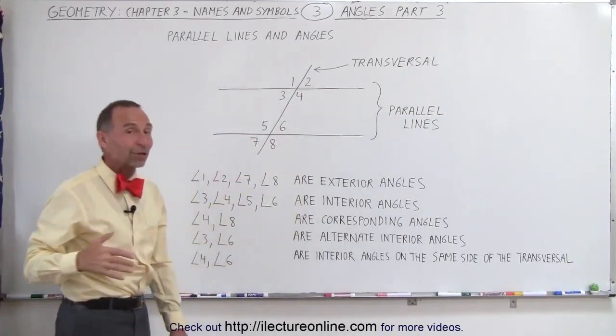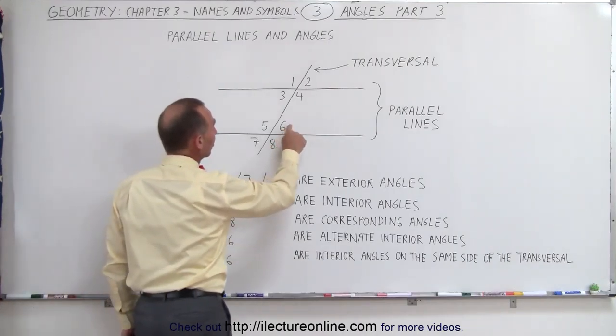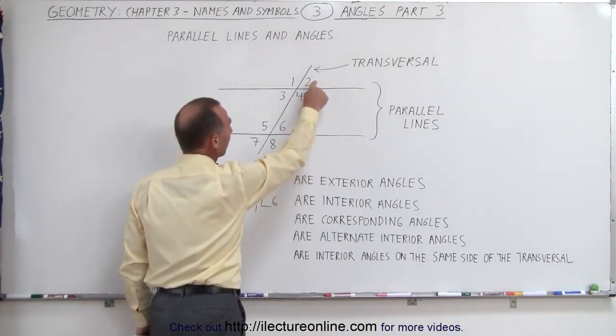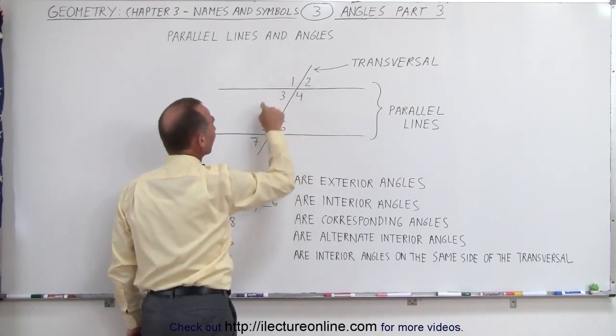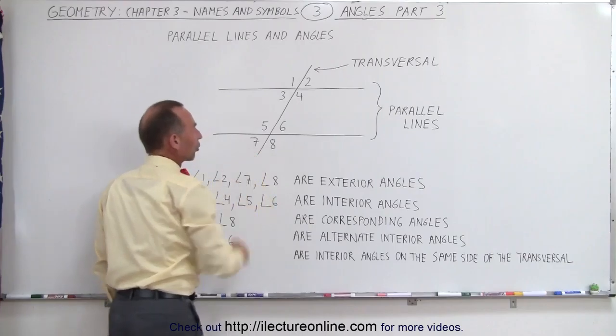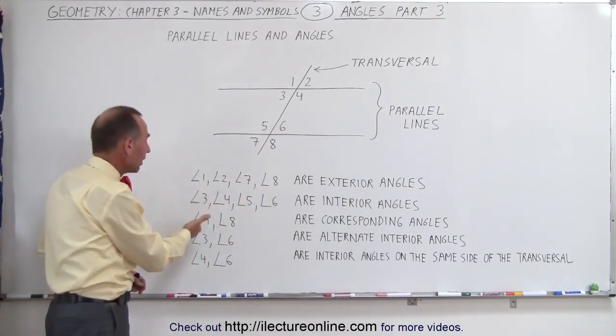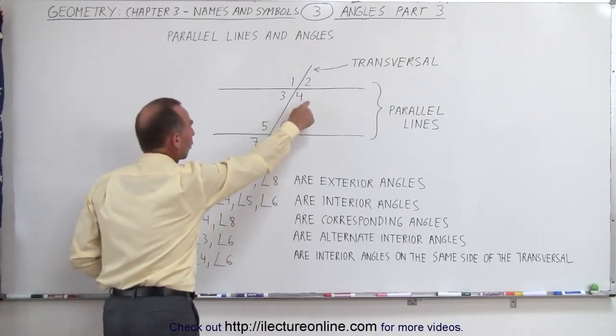It turns out there's three other pairs of angles that are corresponding angles. For example, six and two are also corresponding angles. One and five are corresponding angles, and three and seven are corresponding angles. So we have four sets of corresponding angles with one example here on the board, four and eight.